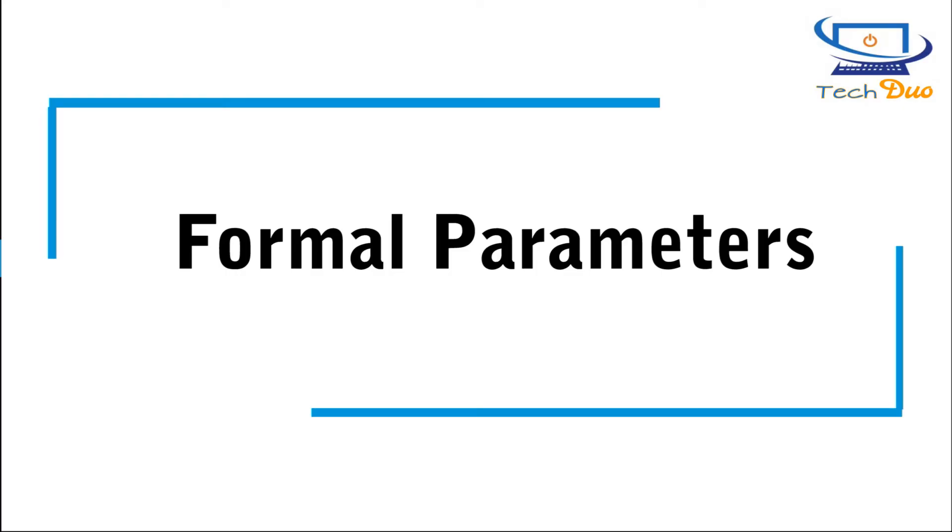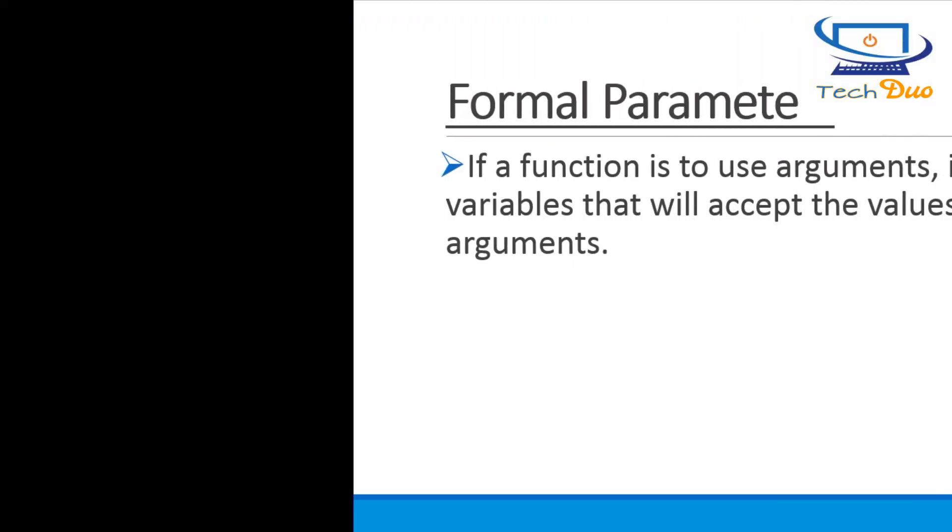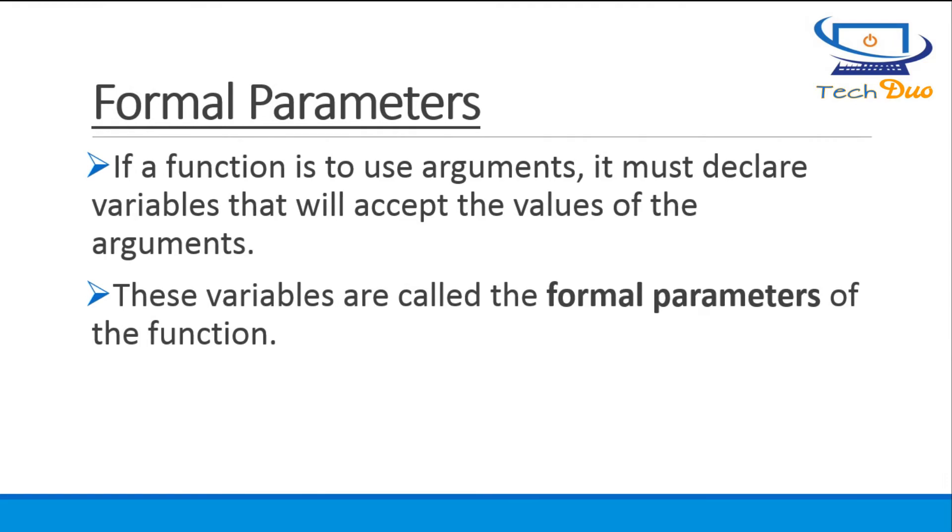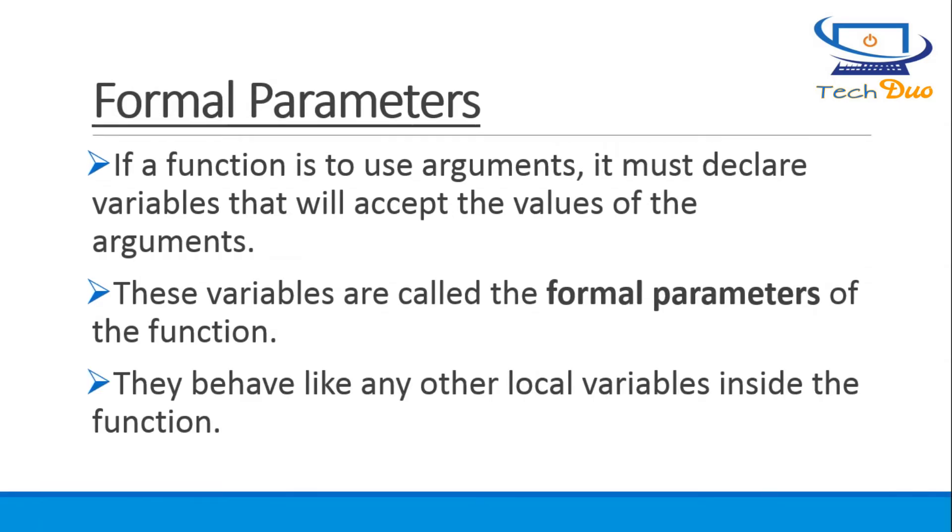Formal parameters. If a function is to use arguments, it must declare variables that will accept the values of the arguments. These variables are called the formal parameters of the function. They behave like any other local variables inside the function.